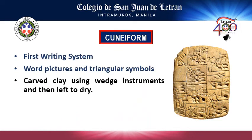Cuneiform was the first writing system. Sumerians used a wedge instrument to carve word features and triangular symbols on clay, then left it to dry. This was used for communication and for the purpose of record keeping.